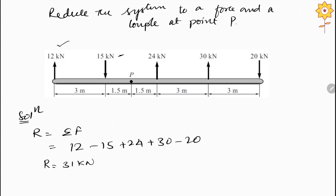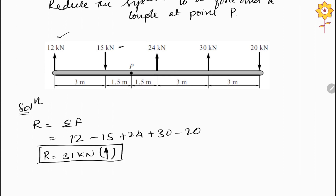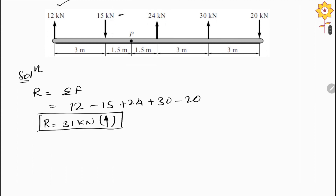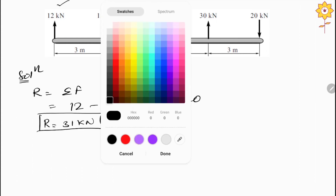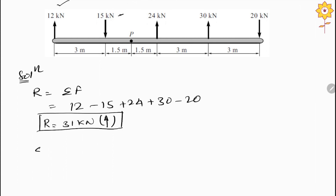Since R is positive it will act upward, so we have found the first part. The second thing is we have to find out the moment, which is the couple. To find the couple we take the summation of moments about point P, because we have to find the force and couple at point P. Moment is nothing but force into the perpendicular distance.